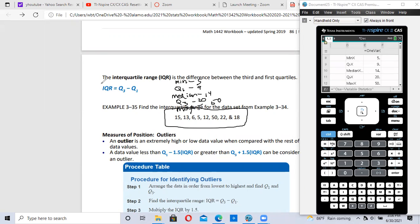Now, to find the IQR, the interquartile range, it's Q3, which is 20, minus Q1, which is 9. So my interquartile range is 11, 20 minus 9. My IQR for this problem is 11.